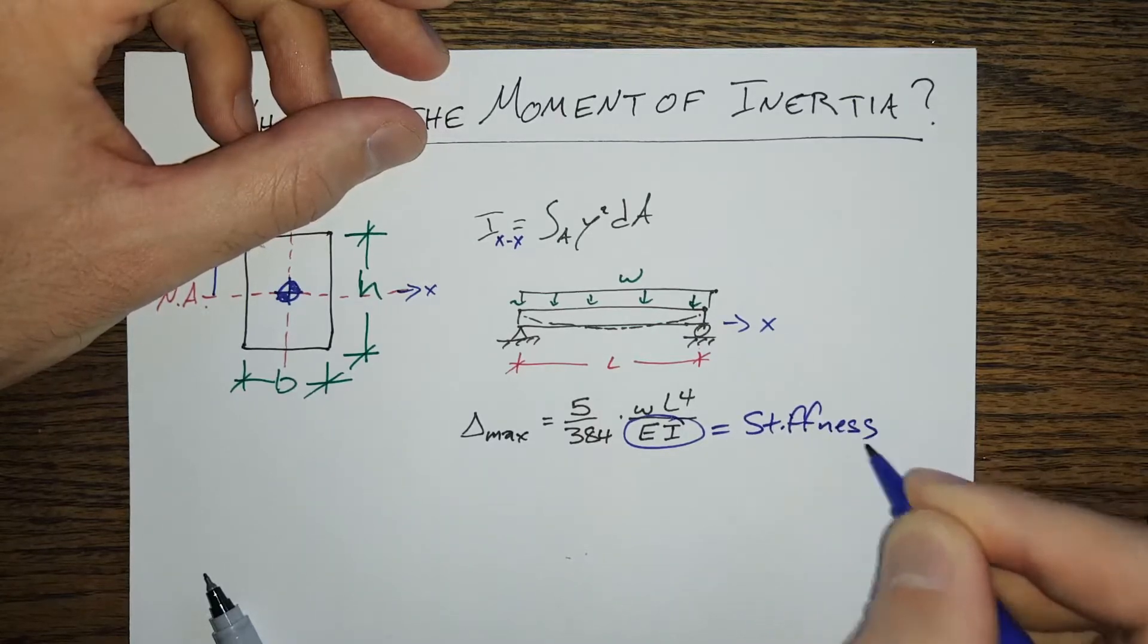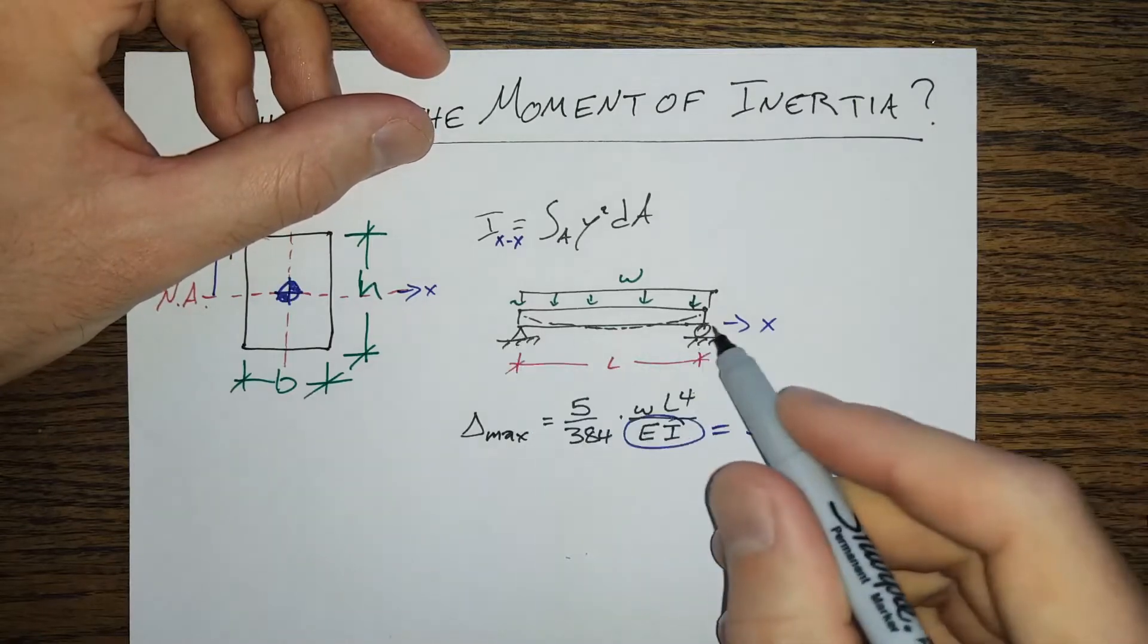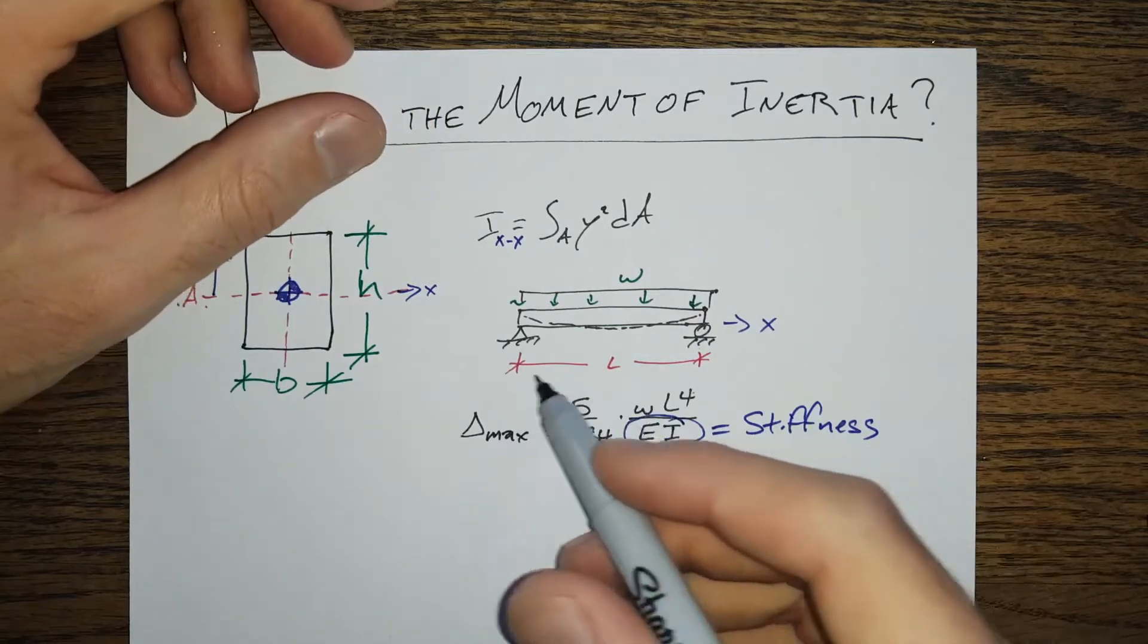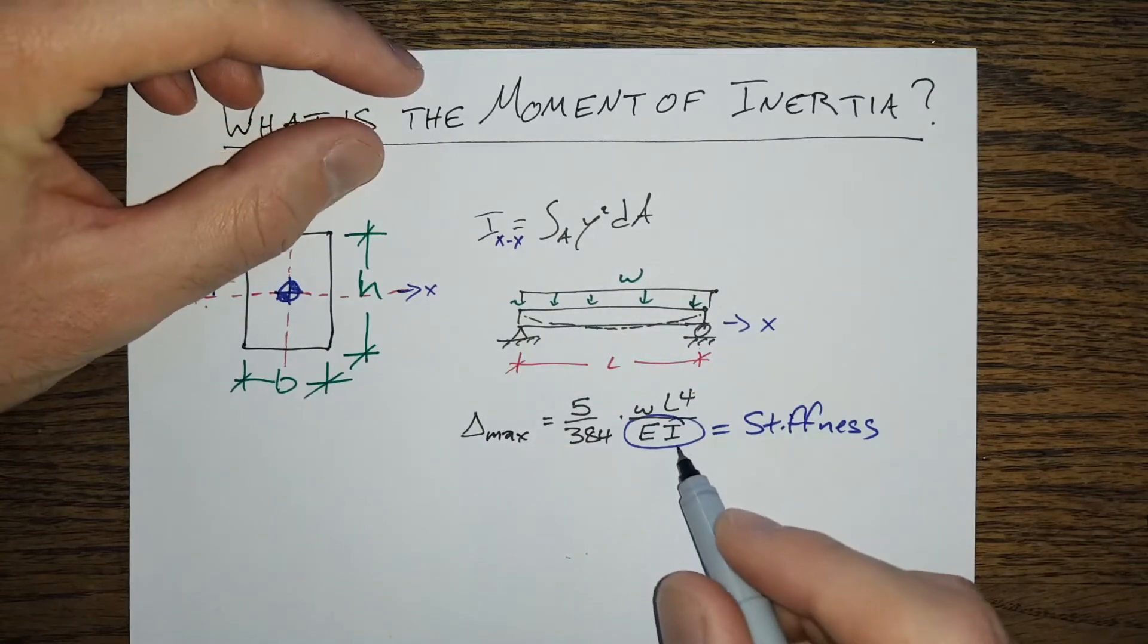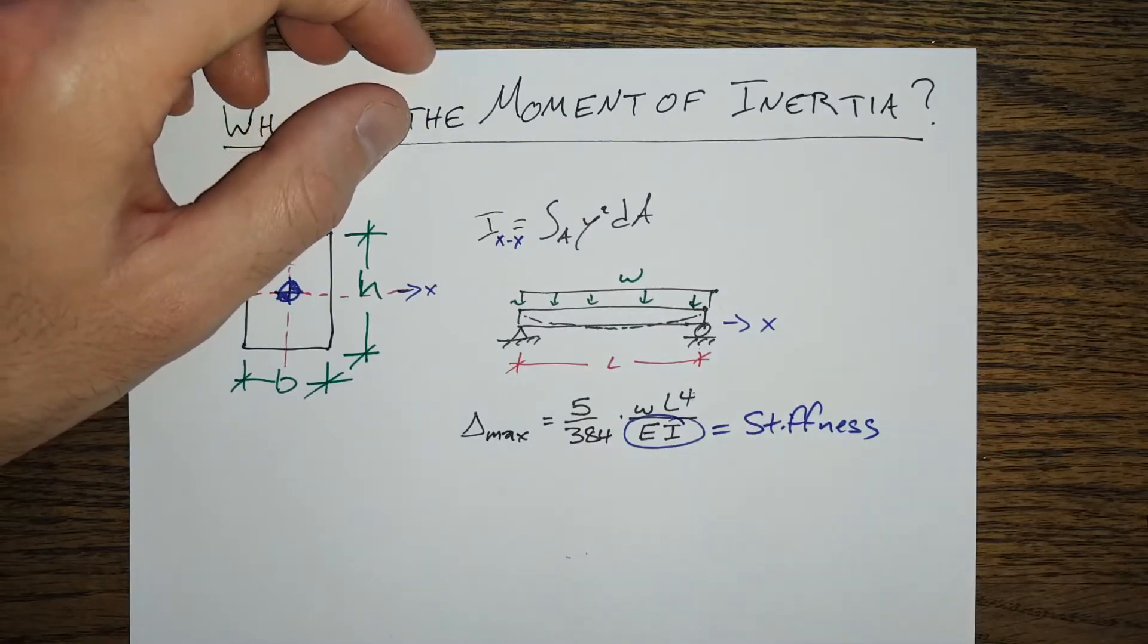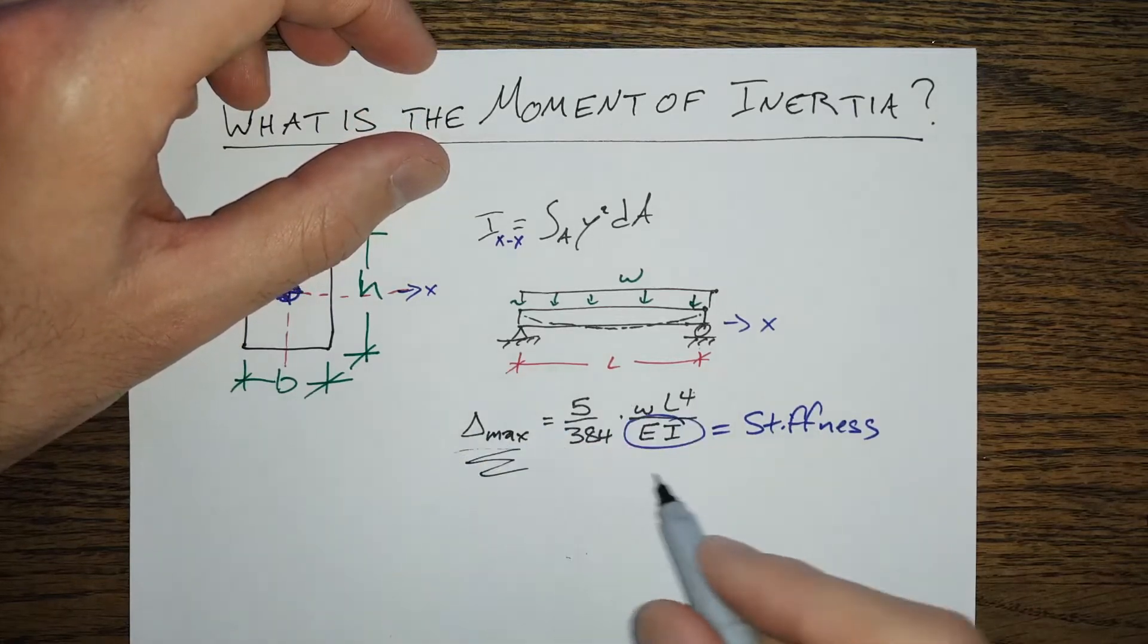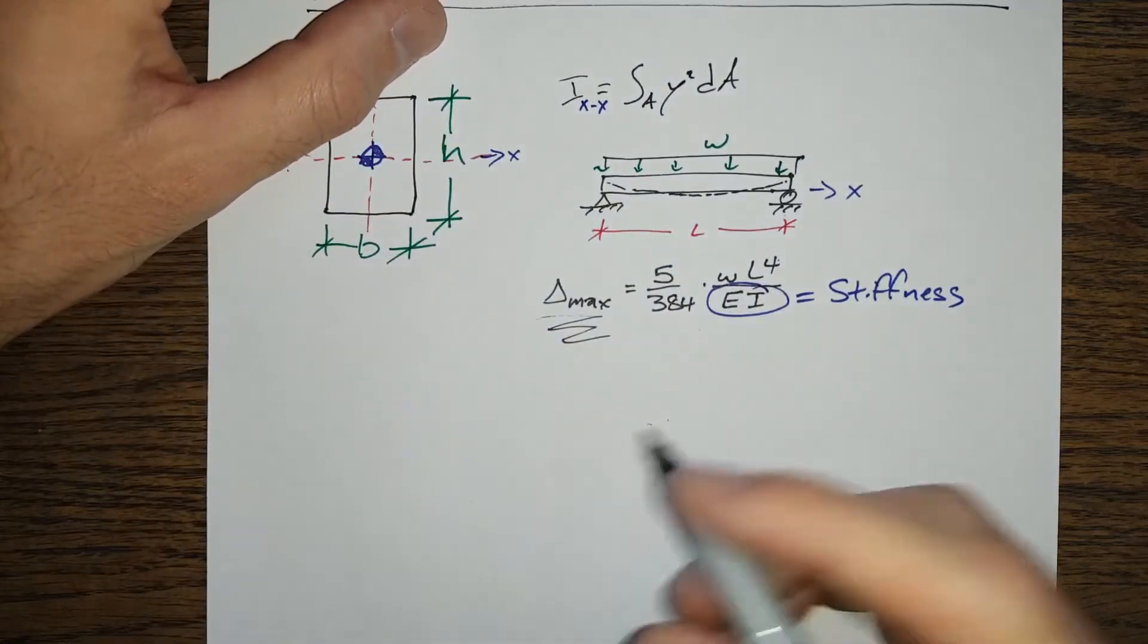This EI down here is the stiffness, the bending stiffness of our beam. Length here is the length of the beam, w is the load, this coefficient out here is just determined by integrating all of the boundary conditions, but this EI is the stiffness. If we swap out a heavier beam, if we swap in a stiffer material, we'll get less deflection.